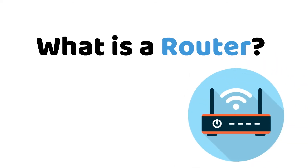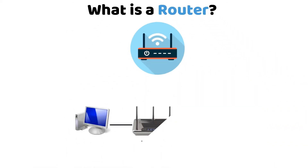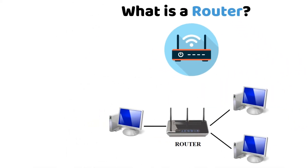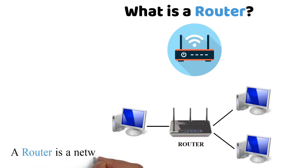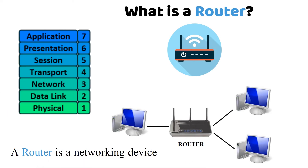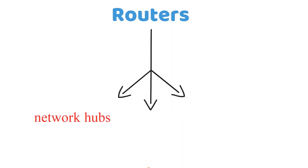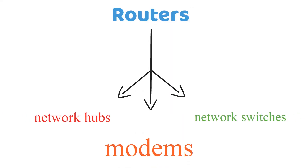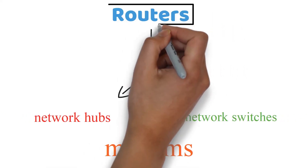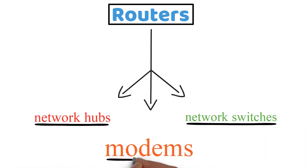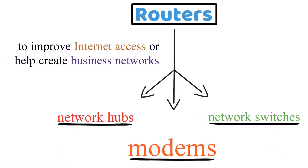What is a router? A router connects two or more networks. It is a networking device that operates under the network layer of the OSI model and establishes a common link between networks to enable data flow between them. Routers are often confused with network hubs, modems, or network switches, but routers can combine the functions of these components and connect with these devices to improve internet access or help create business networks.